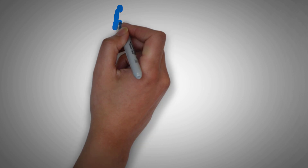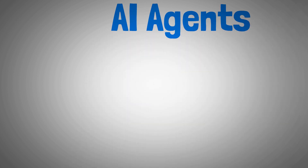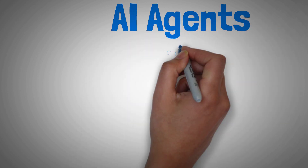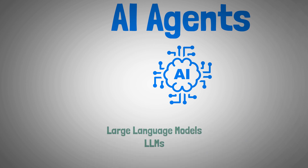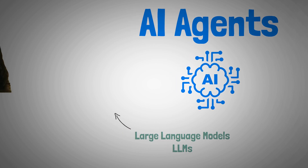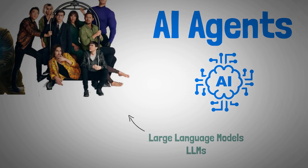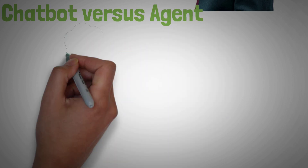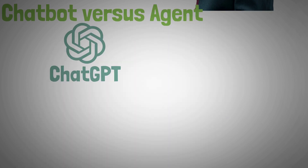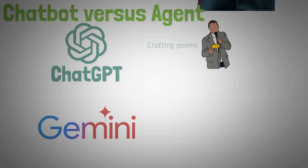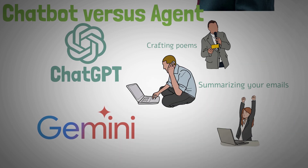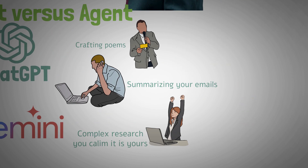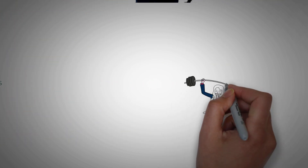That, my friends, is the core idea behind AI agents. In the world of artificial intelligence, we have these incredible tools like large language models, or LLMs. They're like the individual members of The Umbrella Academy, each with their own specialty. However, a single chatbot like ChatGPT or Gemini on its own might be amazing at crafting poems, another at summarizing your emails, and another at writing complex research essays. But what if you have a much more demanding task?